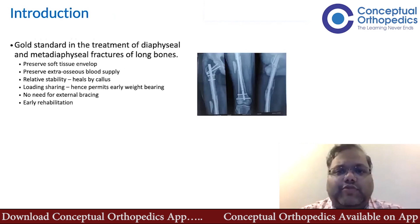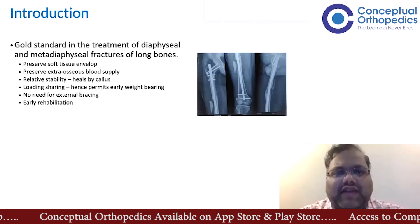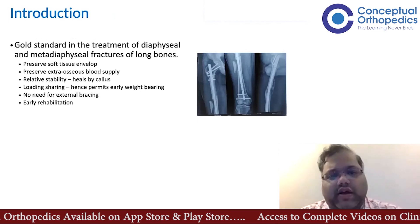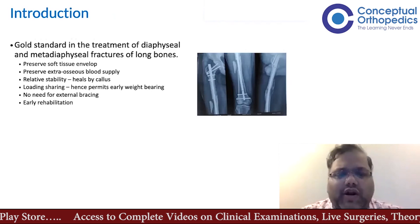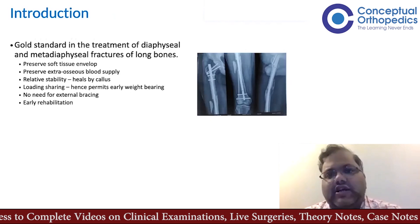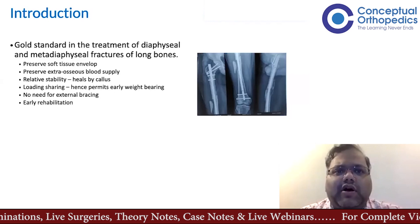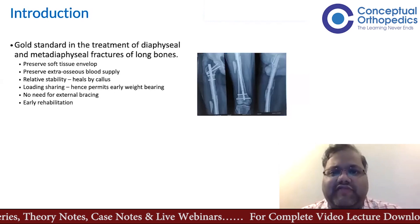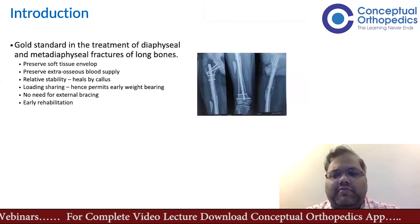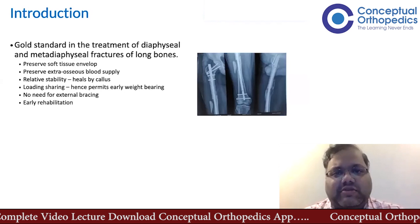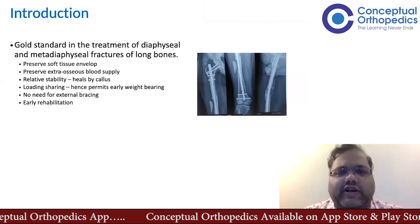Whenever we see a diaphyseal fracture, especially in the lower limb, the first and foremost implant we think of is an intramedullary interlocking nail. It has more or less been a gold standard giving excellent results across the globe, across all hospitals, as long as good principles were followed. The key advantage of nailing over most other types of stabilization is that we preserve the soft tissue envelope, especially in the fracture zone and zone of injury, since nailing is done from a remote area away from the main fracture zone.